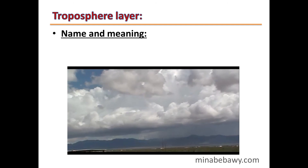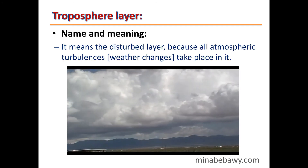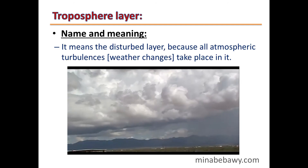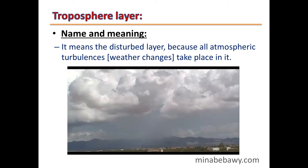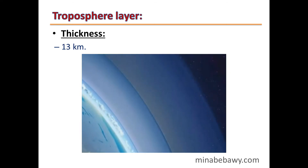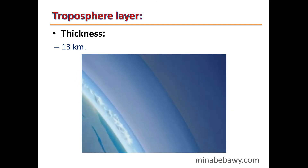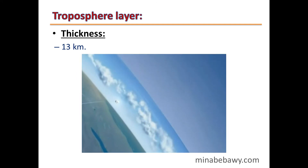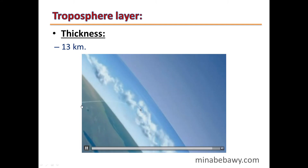The first layer is called the Troposphere, which means the 'disturbed layer.' This is because all atmospheric turbulences and weather changes — rain, clouds, and storms — take place in it. Its thickness is 13 km from sea level to its end.